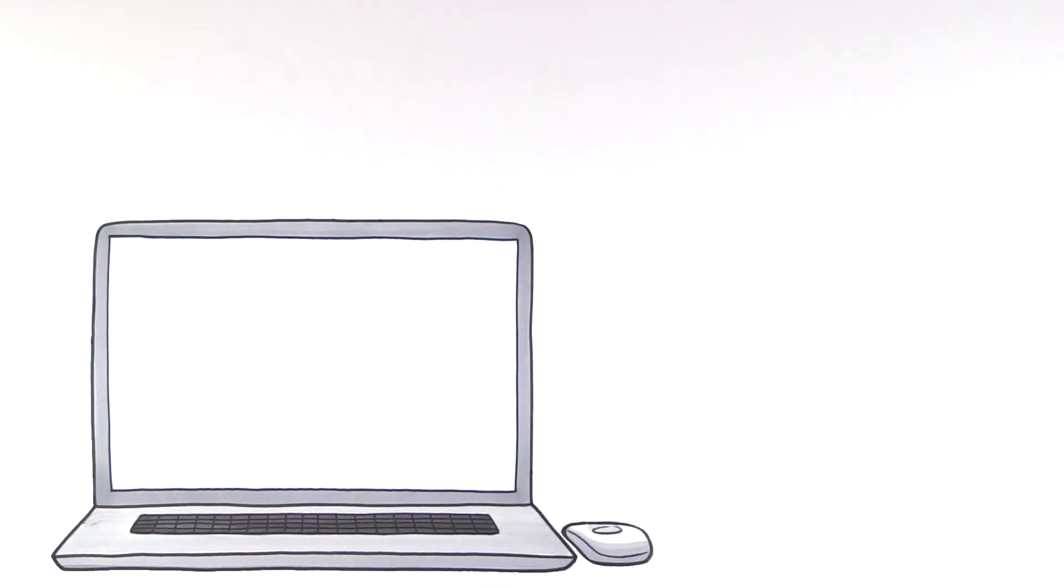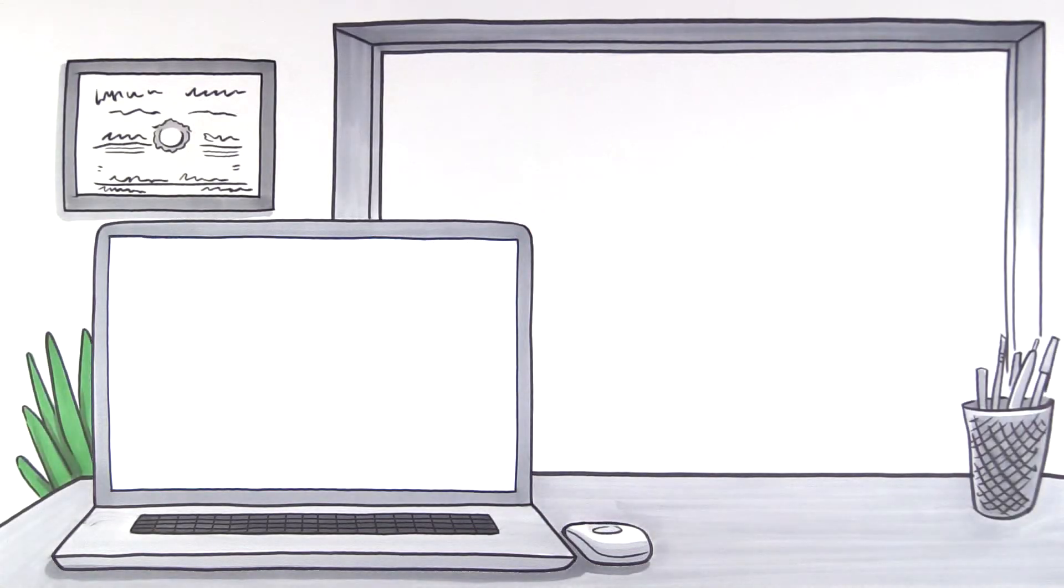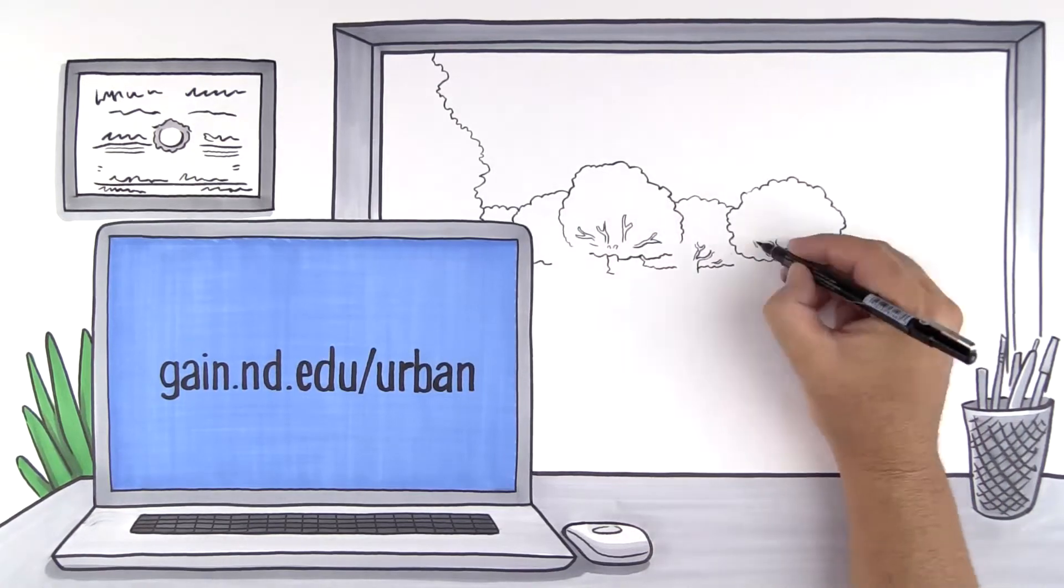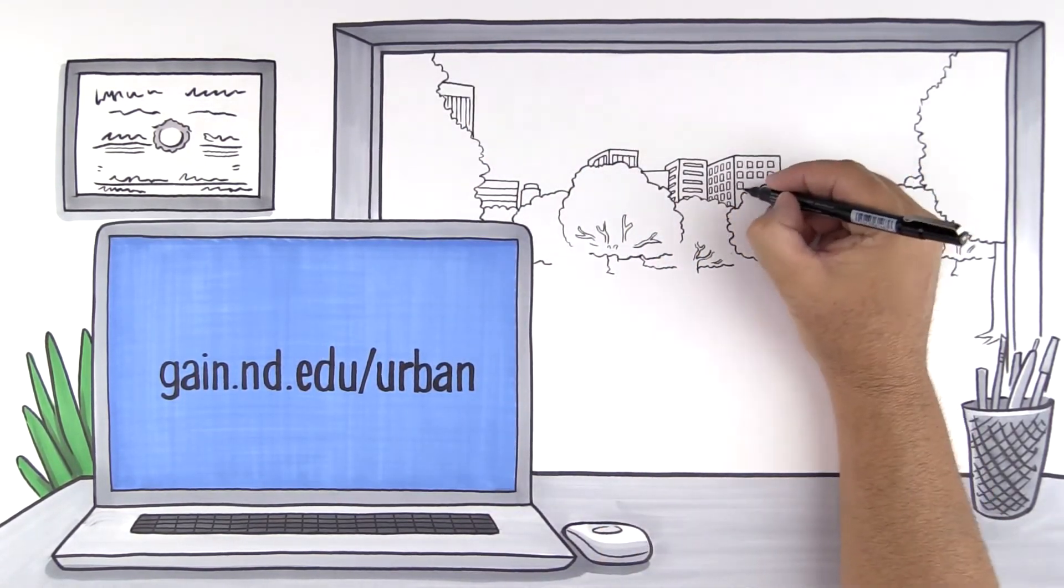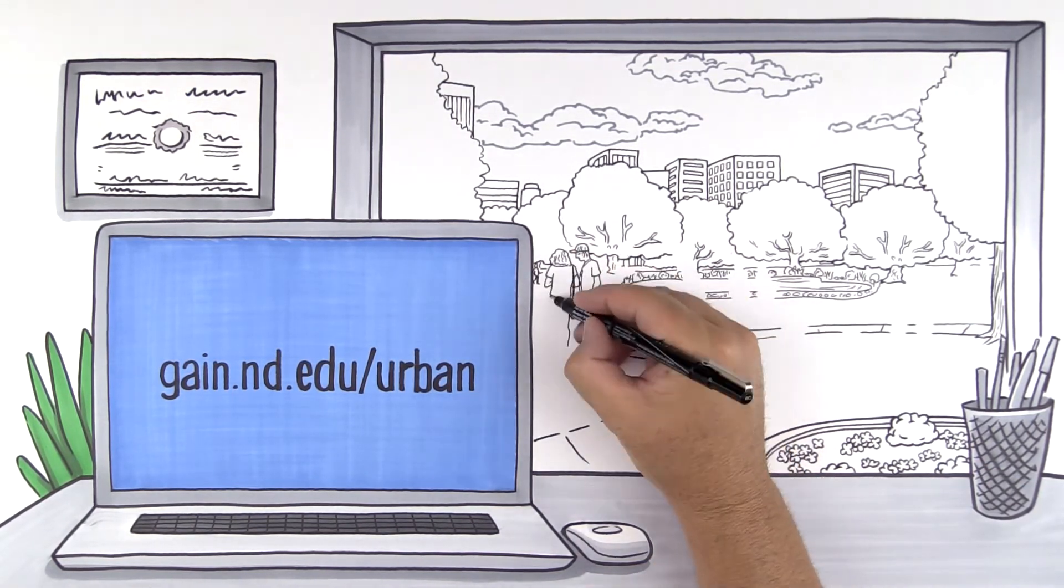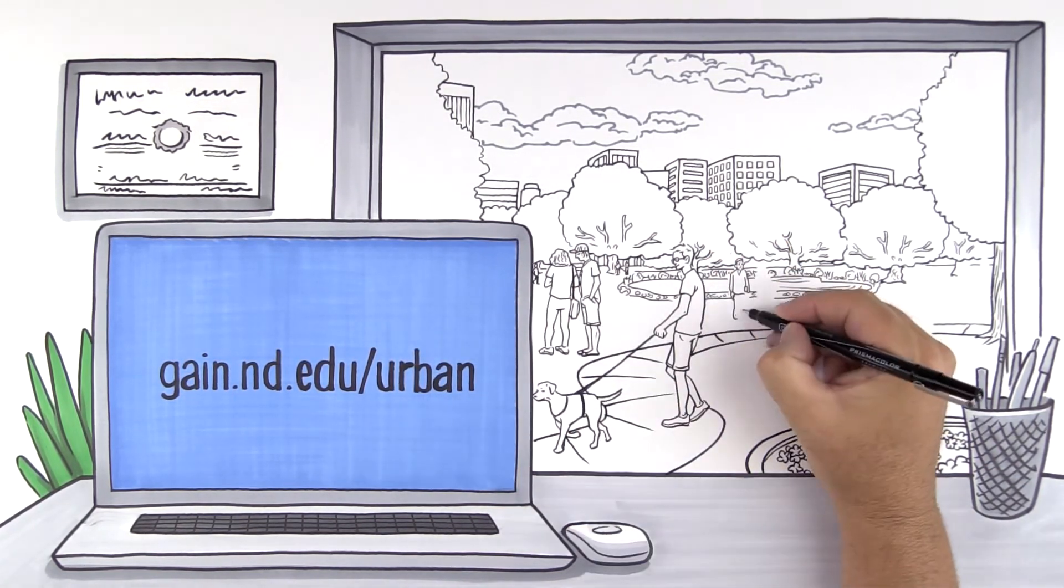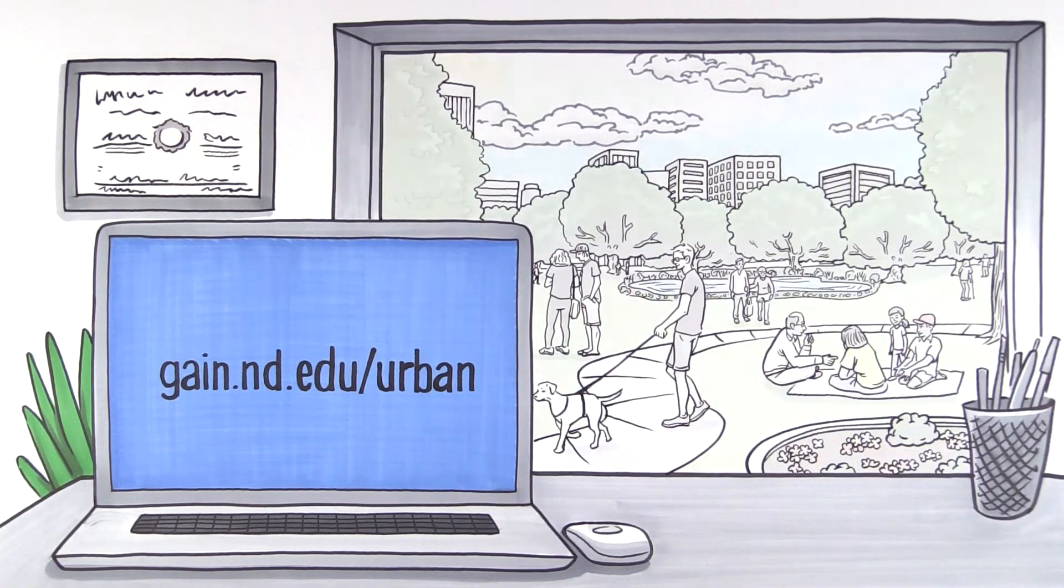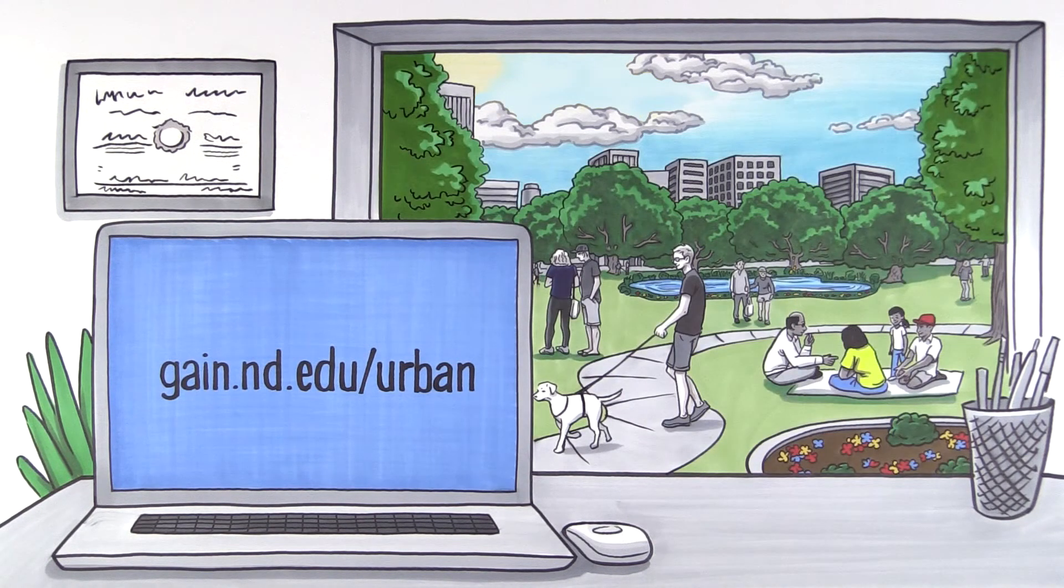To begin exploring your city, go to gain.nd.edu/urban. The tool, which is made possible through support from the Kresge Foundation, is easy to use, with guidance to help you make the most of the data. Try it today and see how you can use the UAA to inform decision-making and serve your local society.